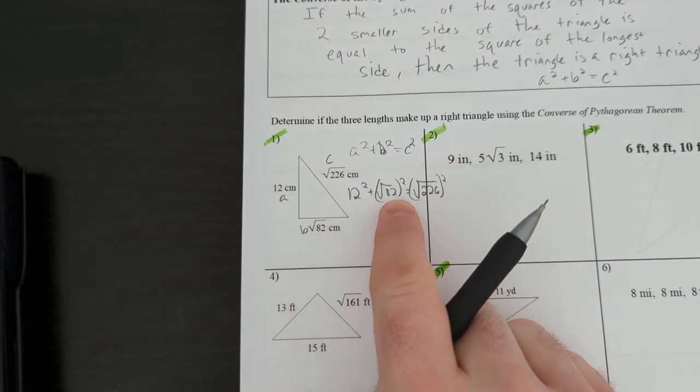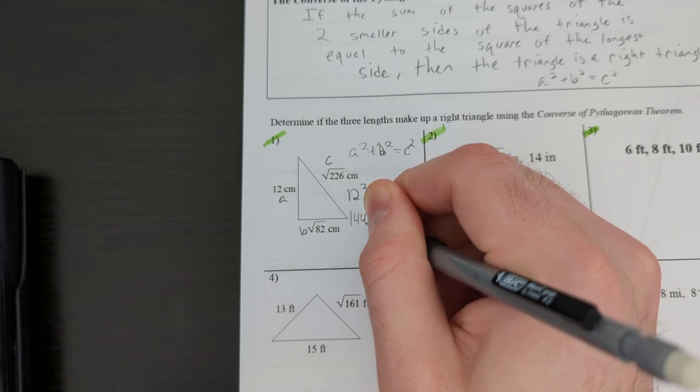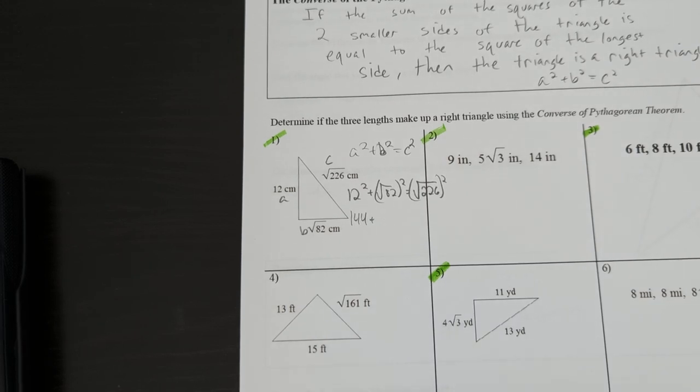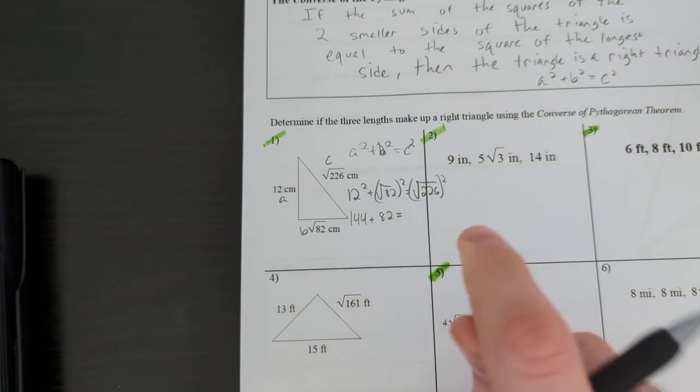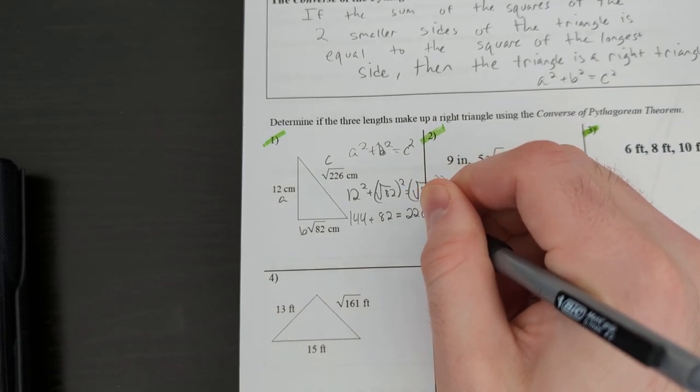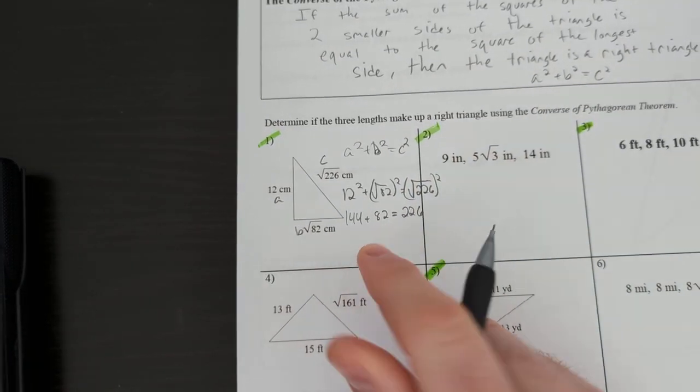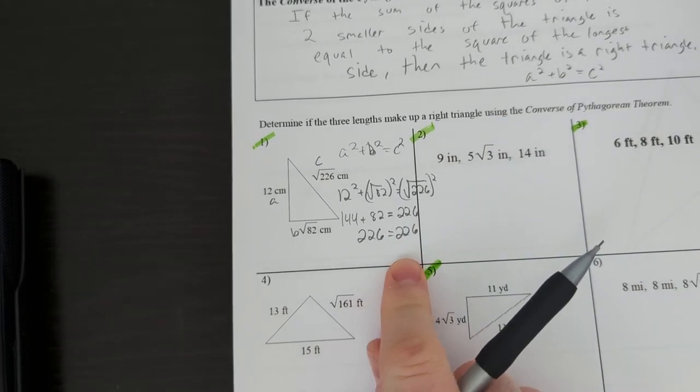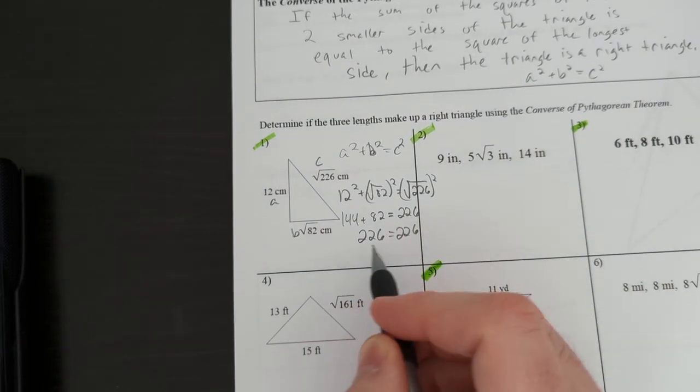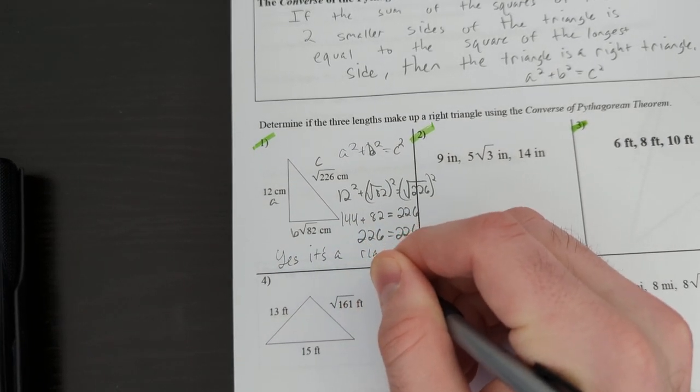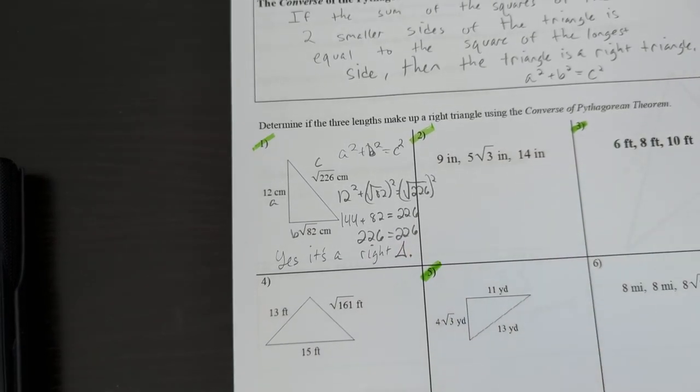So what you're going to do is type this in. 12 squared is 144. The square root of 82 squared, again, we talked about this in the previous problem, the square root and the square, if it's by itself, cancels out, and you just have 82. Same thing here. The square root of 226 and the square cancel out. You get 226. 144 plus 82 ends up being 226. And you can see these two sides are equal. So what you're going to say is, yes, it's a right triangle.